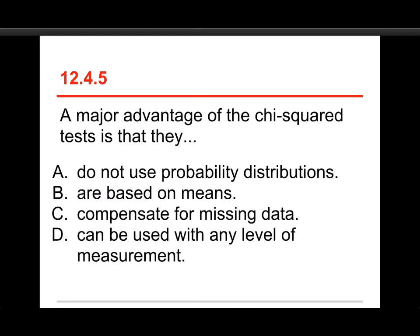Okay, our last one. A major advantage of the chi-squared test is that they A, do not use probability distributions, B, are based on means, C, compensate for missing data, or D, can be used with any level of measurement.